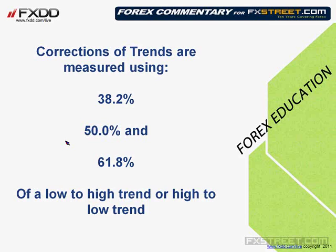The key Fibonacci retracement levels represent a retracement of a trend — from a low to a high, or a high to a low. The market primarily pays attention to three levels: 38.2%, 50%, and 61.8%. Those are the Fibonacci retracement levels you, as a trader, should pay attention to for clues on how to define risk. If you aren't versed in Fibonacci retracements, send me an email at greg@fxdd.com and I'll send you links to past webinars.